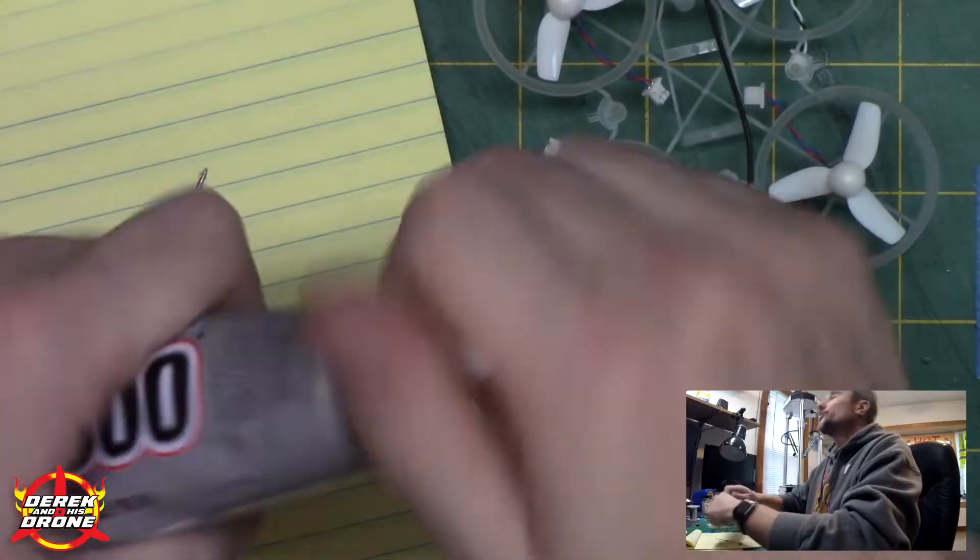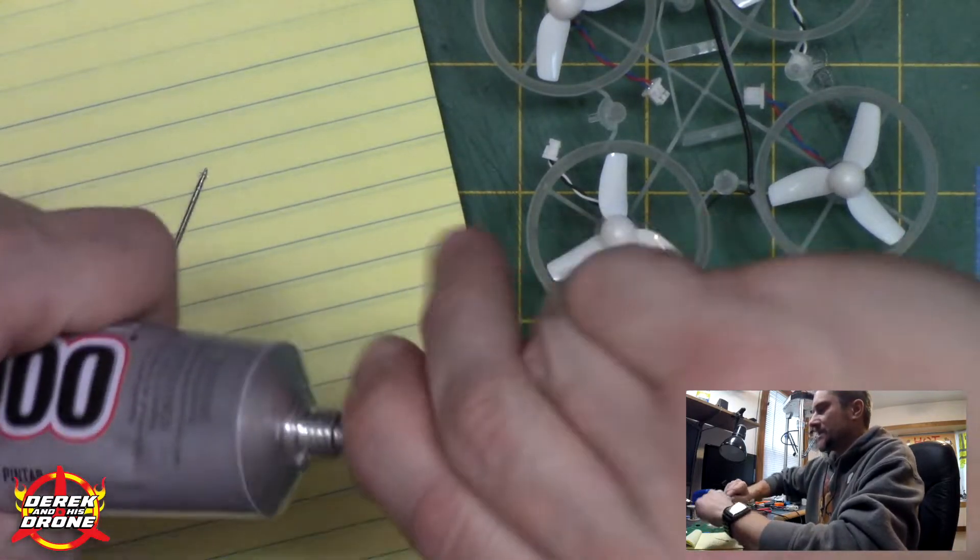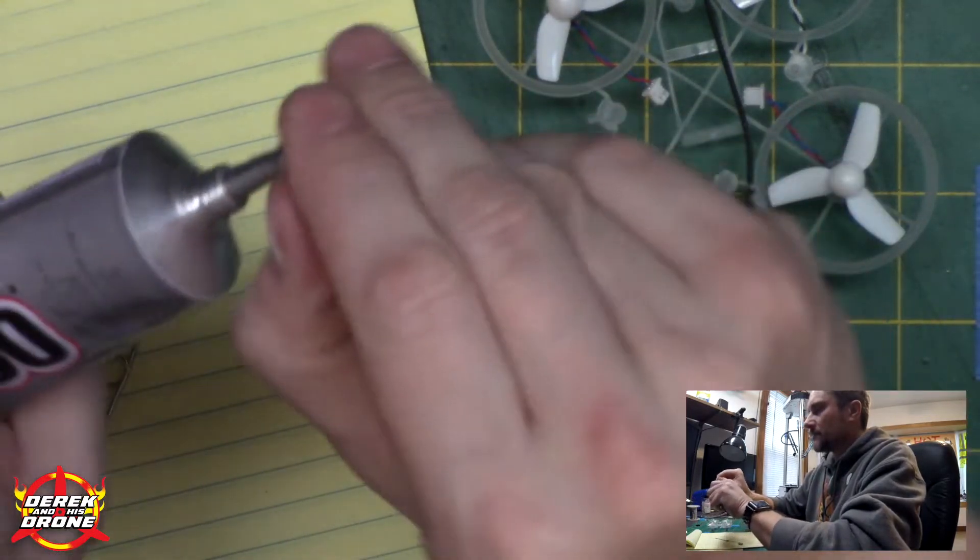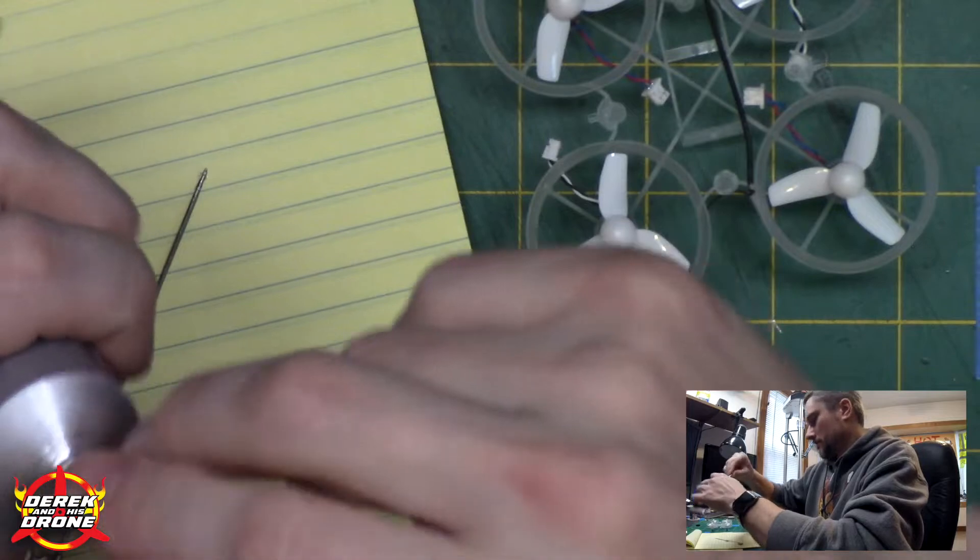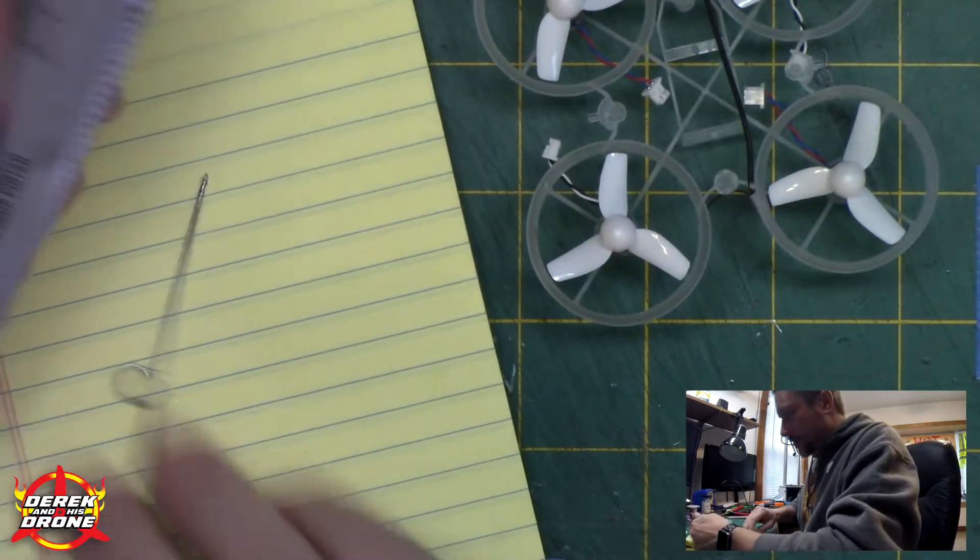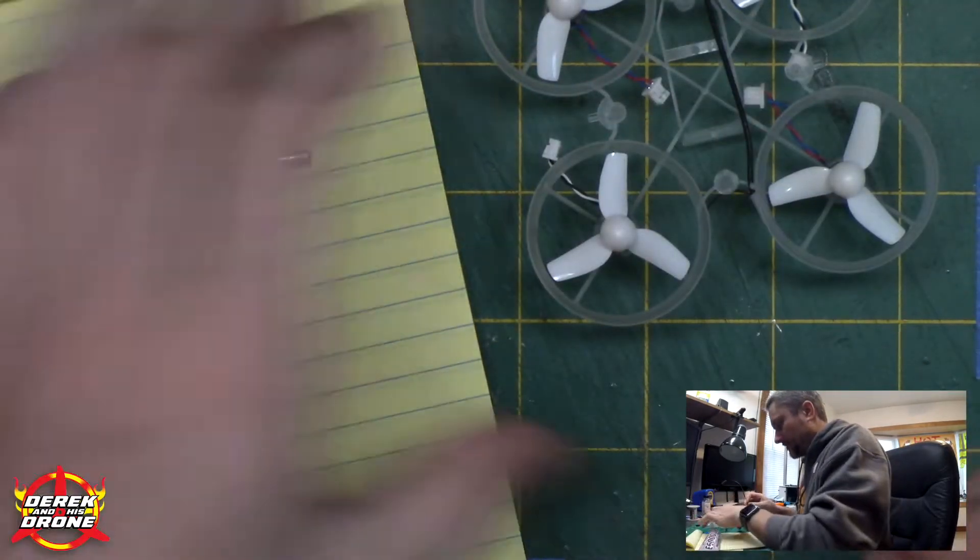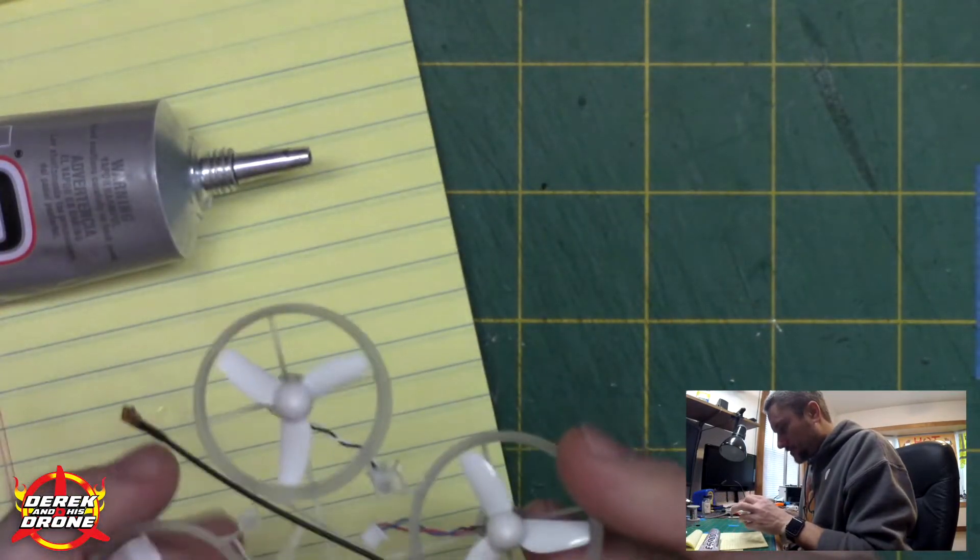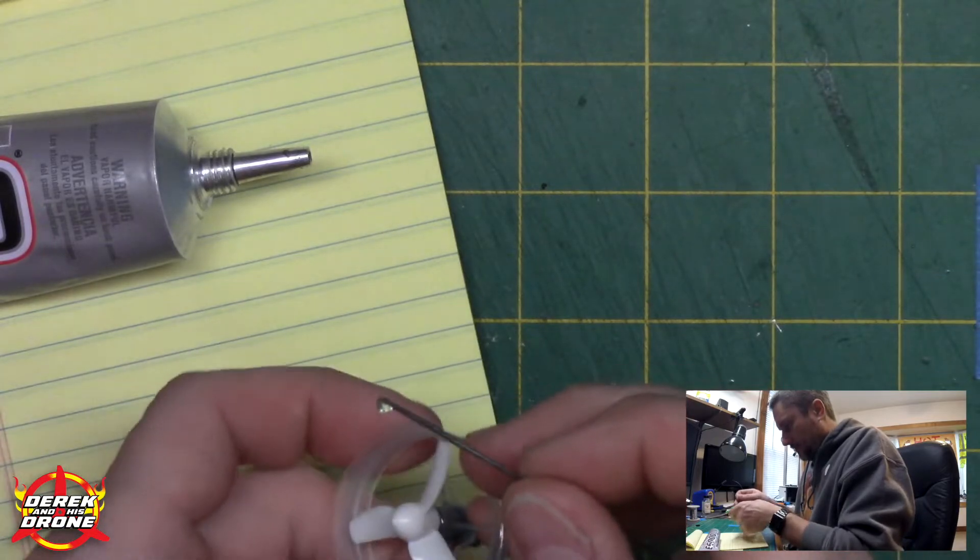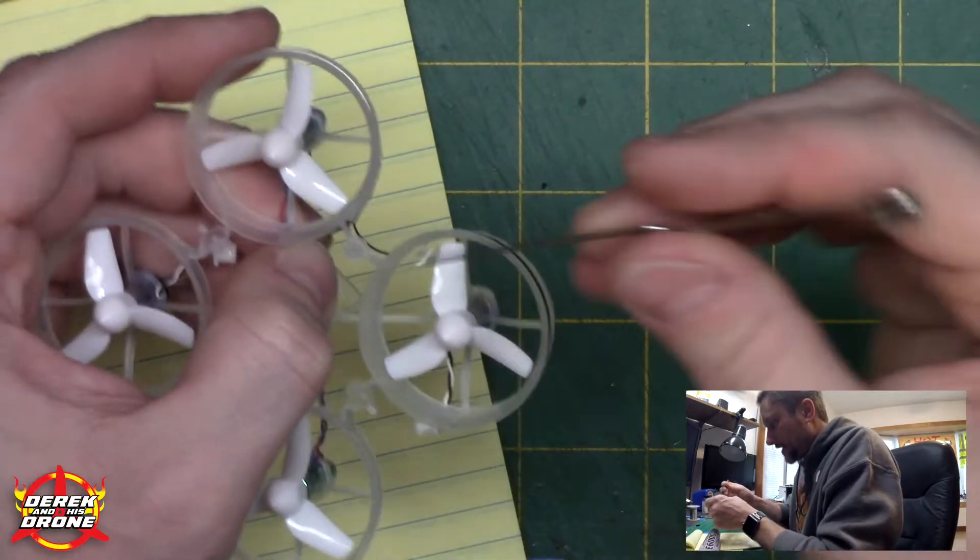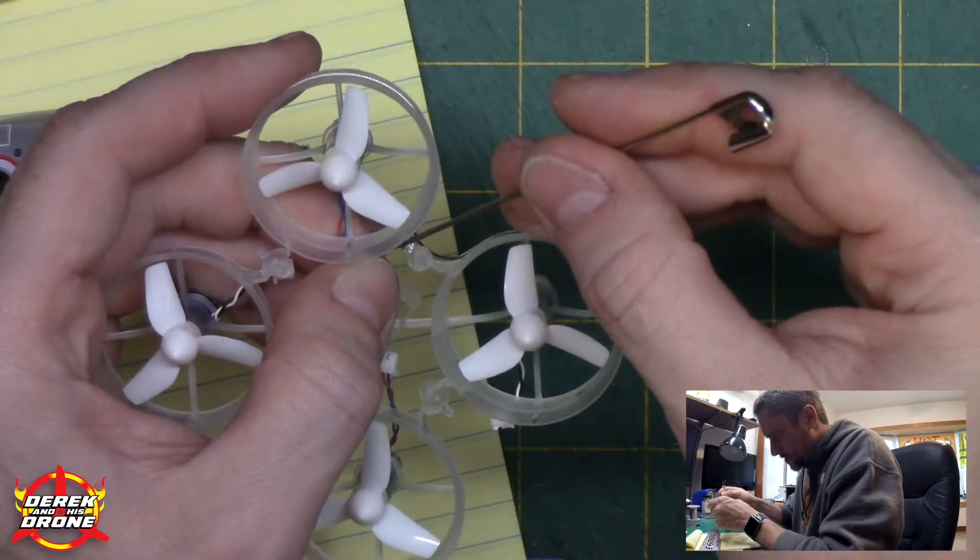To complete the installation of the frame, I'm going to take my E6000 again. And I'm going to put a little bit in that corner that we cut now. You know, you don't really need a lot of this stuff. That's why I'm using this tool.